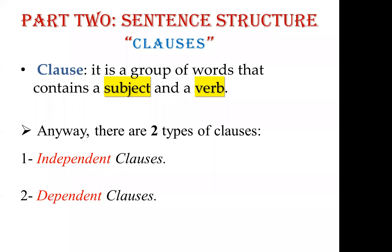Independent means something that stands by itself and doesn't depend on anything else — it is free and can stand alone. So an independent clause is something complete by itself; it doesn't need anything else. In contrast, a dependent clause depends on another thing. It needs something to make it stronger or to give it a complete meaning. The independent clause can stand alone, but the dependent clause cannot.